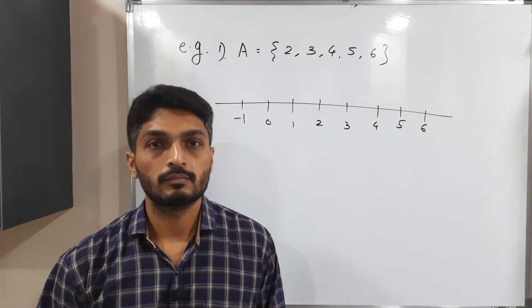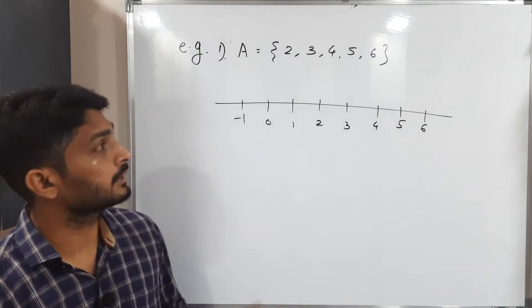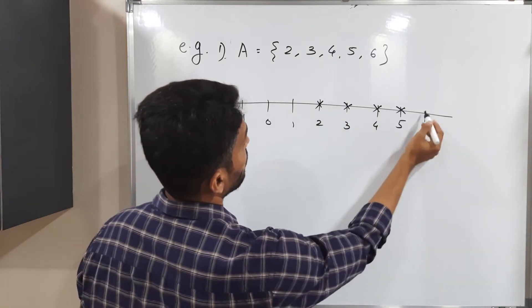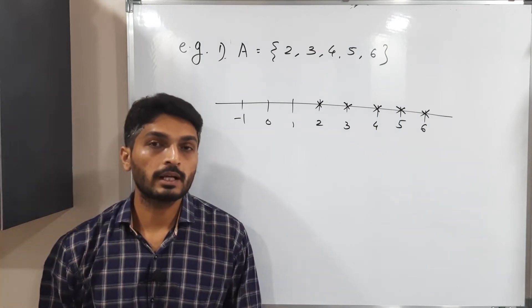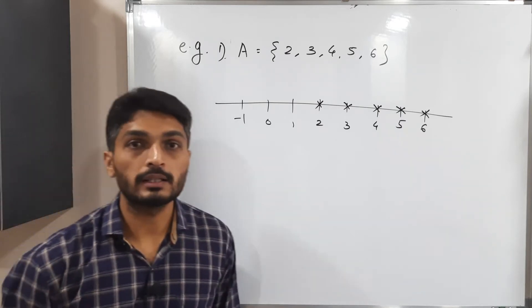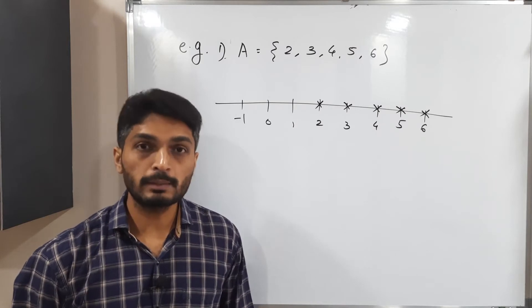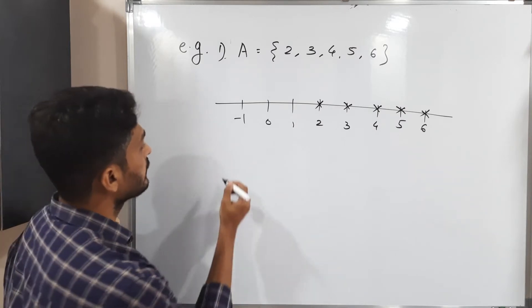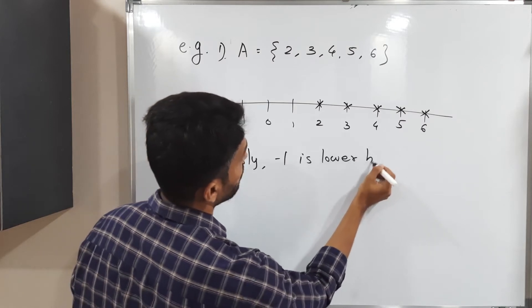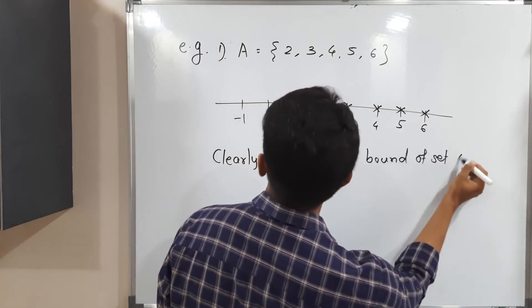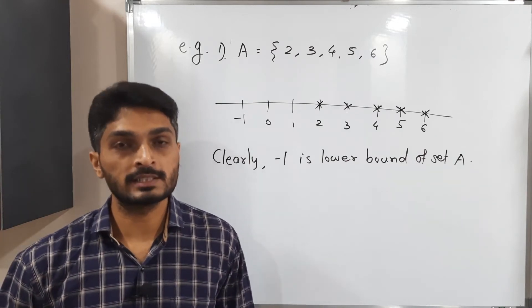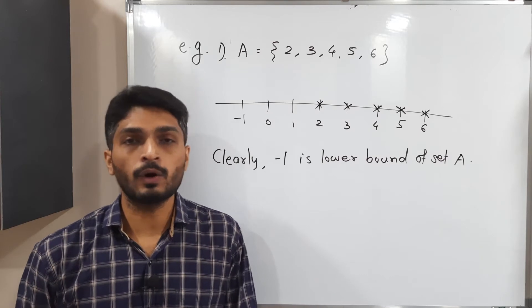Let us discuss an example. The given set A has only five elements: {2, 3, 4, 5, 6}. Clearly it is bounded below. Our target is to find its infimum or greatest lower bound. Here, minus one is a lower bound of this set since all elements are greater than or equal to minus one. Zero is also a lower bound, one is also a lower bound, and 1.5 is also a lower bound — we can find many lower bounds.